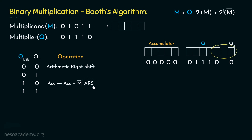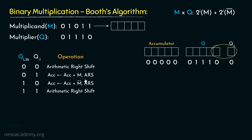Once we begin the sequence of ones, we will come across only ones, so we perform arithmetic right shifts again. Once the sequence of ones is finished, we will come across the combination 01 — Q LSB being 0 and Q-1 being 1 — denoting the last one in the sequence. In that case, we are going to add the accumulator's content with M, and thereafter perform arithmetic right shift once more. These operations will be more clear as soon as we start performing them.